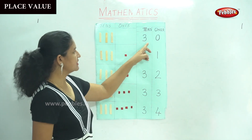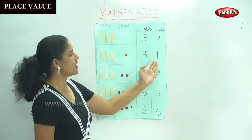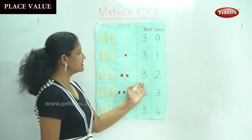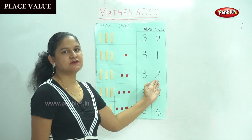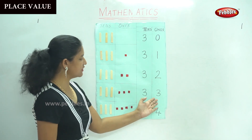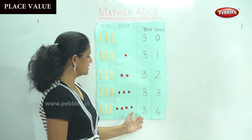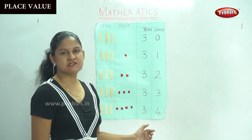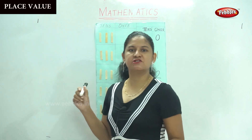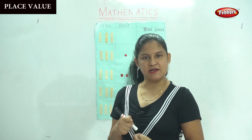So we have three tens, zero ones. Three tens, one ones, which gives us number thirty-one. Three tens, two ones, which is number thirty-two. Three tens, three ones, which is number thirty-three. Three tens, four ones, which is number thirty-four. So in this way we are able to learn to identify the numbers and write the place value of the numbers as well.